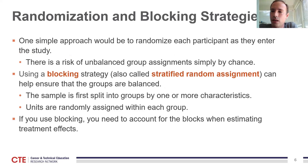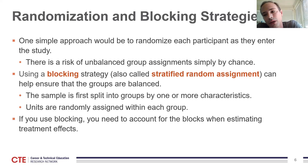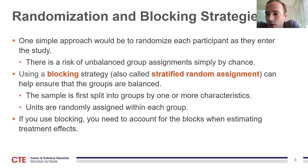To operationalize random assignment in practice, one simple approach is to randomize each participant as they enter the study — for example, flipping a coin as students are determined eligible. The problem with this approach is that the treatment and control groups could end up unbalanced simply by chance. For example, if you expect the sample to be composed mostly of males, the small proportion of females could end up assigned mostly to treatment or control. If the two groups are severely unbalanced by gender, you may question whether the estimated treatment effects are biased by that imbalance.